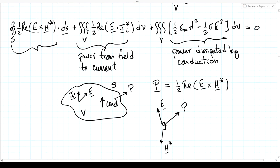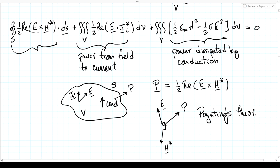If we put a negative sign in front of the work term, it represents power transferred from the impressed current to the field. We can imagine currents putting power into the field, which then goes into conduction losses or flows through the surface out to infinity. This is Poynting's theorem. For our purposes, working in the phasor domain, one-half the real part of E cross H conjugate represents the time-average directed intensity of the electromagnetic field in watts per square meter.